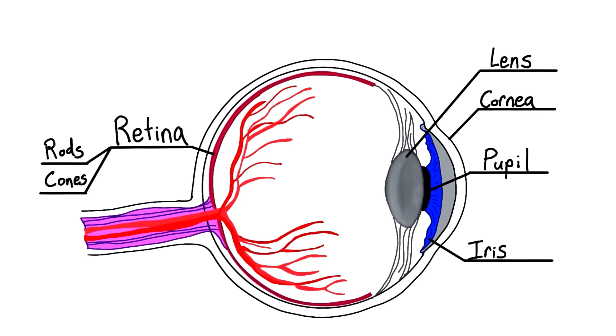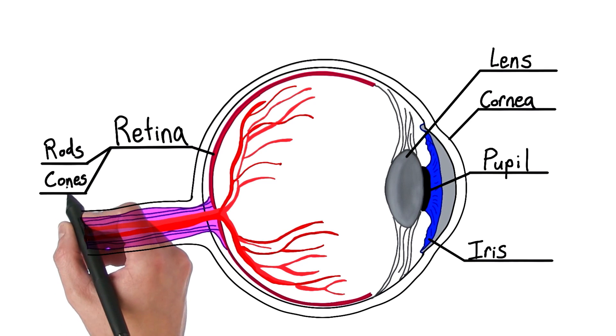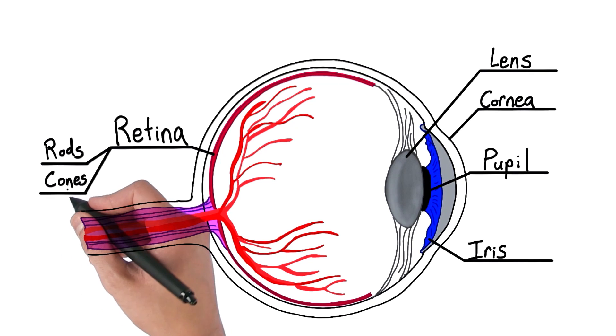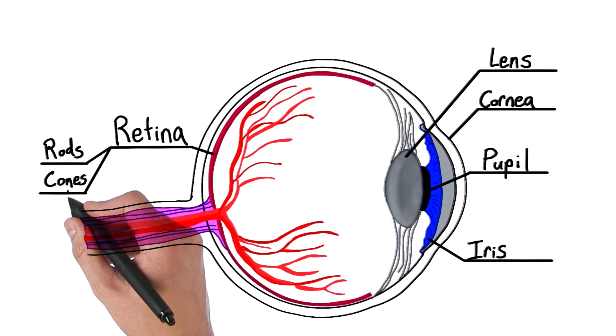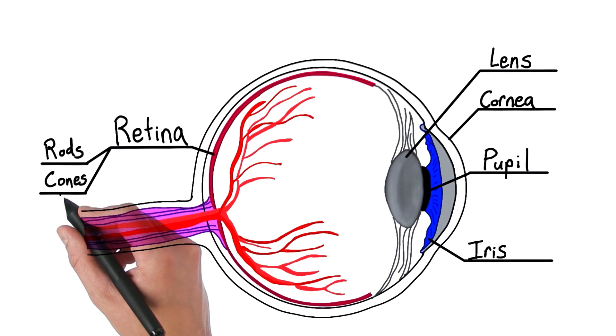So then, does that mean the cones help us see color? Exactly. And there's actually three different types of cones. Some are sensitive to red light, which is a long wavelength. Some are sensitive to green, or medium wavelength light. And some are sensitive to blue, short wavelength light. So, these are used for color vision.